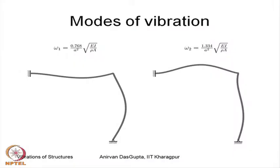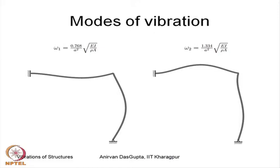These are the first two circular eigen frequencies of the system, which have been calculated using this Lagrangian and the expansion discussed. This figure shows the first two modes of vibration of this plane frame. You can see that the angle of 90 degrees is being maintained in both these cases, since we have chosen our admissible functions which satisfy these geometric boundary conditions already.